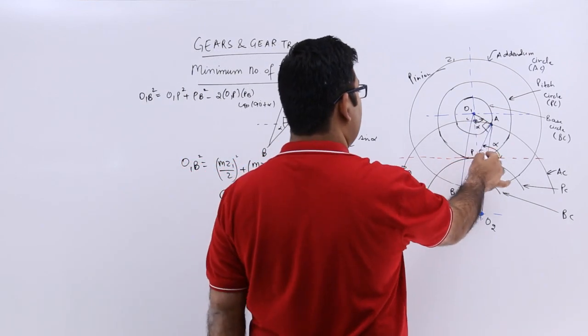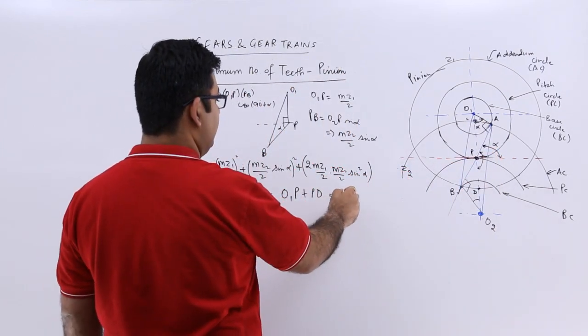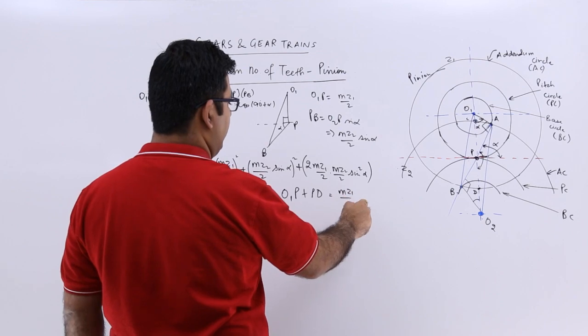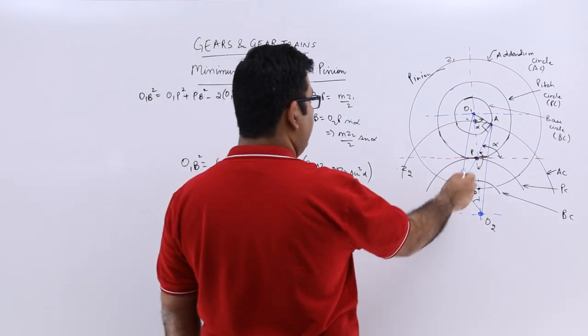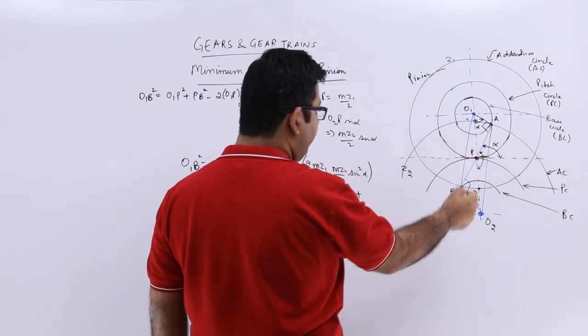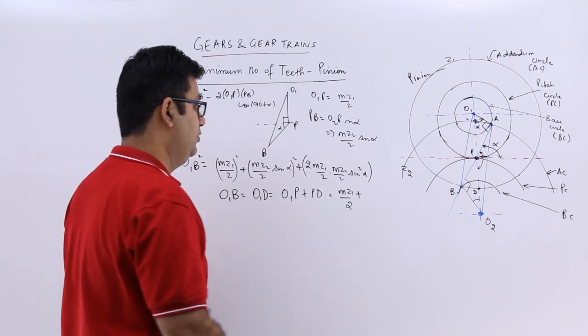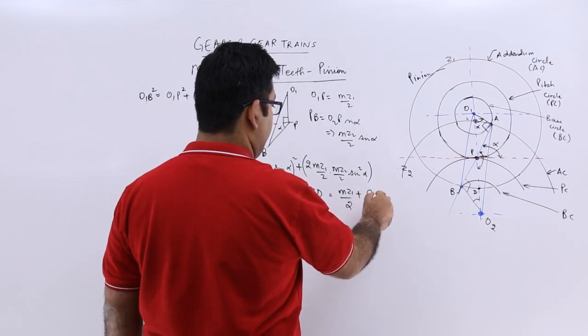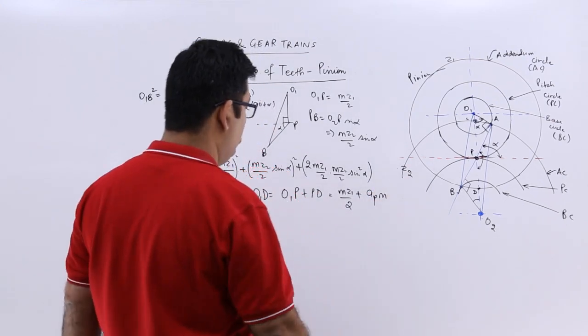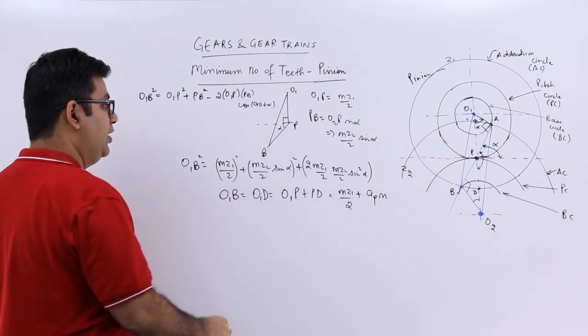O₁P is the pitch circle radius of the pinion, so you get m·z₁/2. PD is the addendum for the pinion, which is aₚ·m. So you get the value for O₁B from this equation.